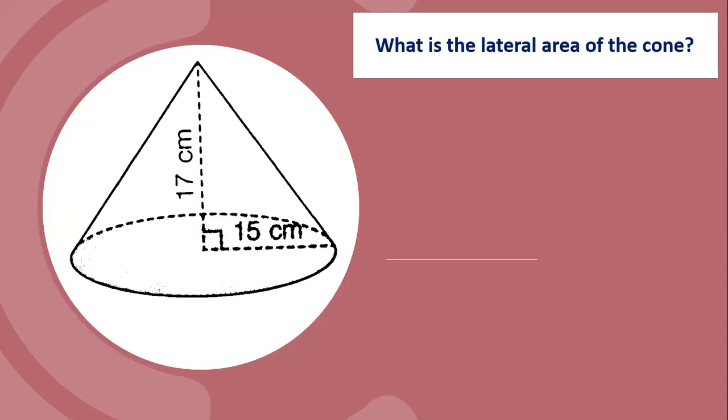First, calculate the slant height. Slant height is equal to the square root of the height squared plus the base radius squared.